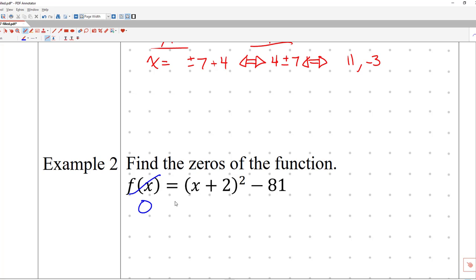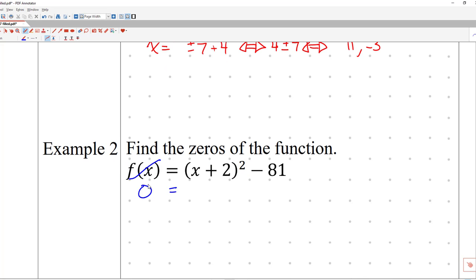So this f(x) is equal to zero now. That's what it means to find the zeros. Where are the heights zero? And this f(x) means height. So zero is equal to (x + 2)² - 81.